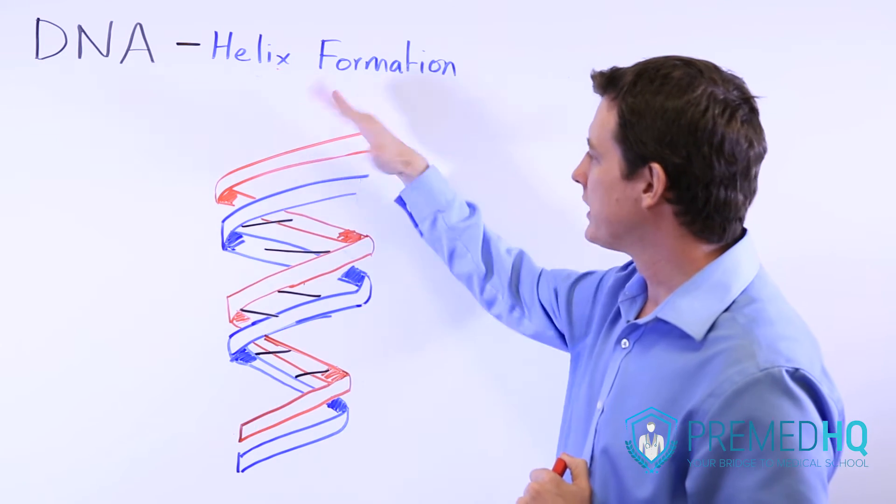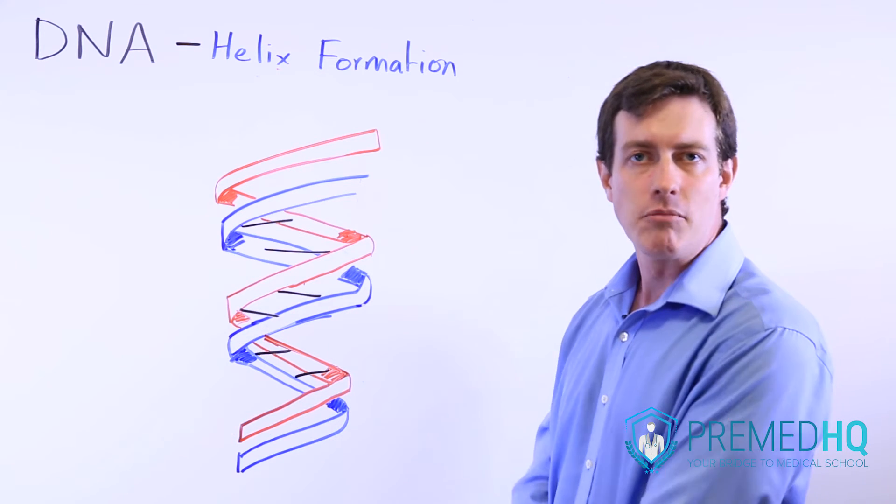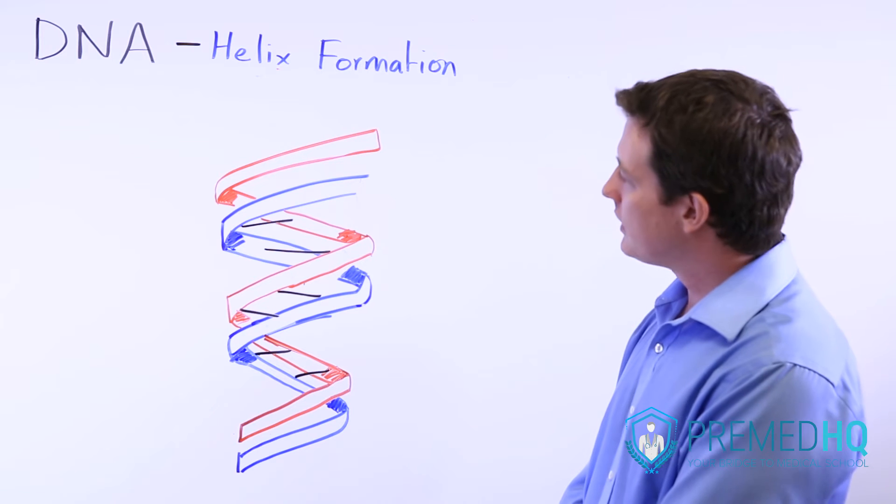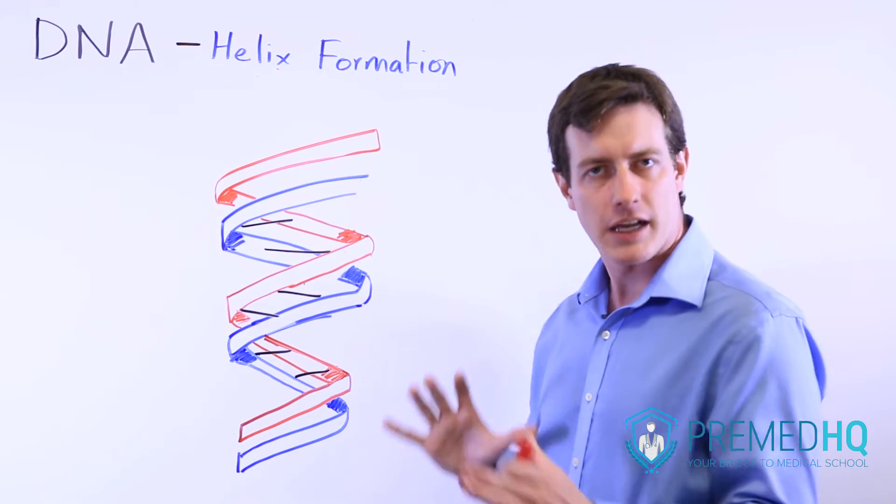Also remember that you measure the length of a strand in how many base pairs it is. That's another important thing to be thinking about. And when you encounter a helix, you may encounter a concept known as a major groove and a minor groove.